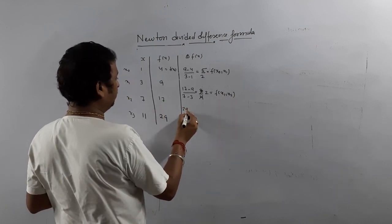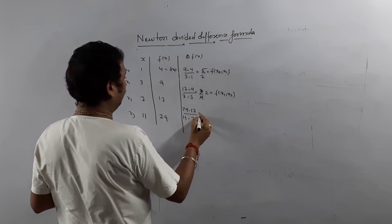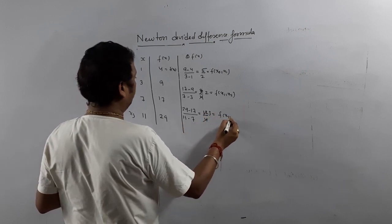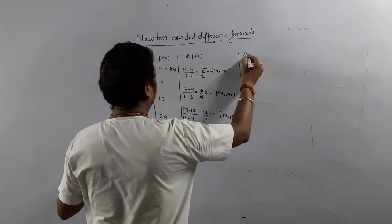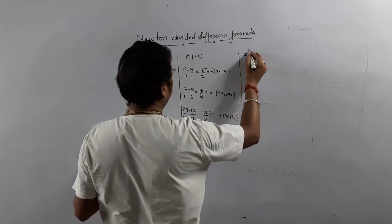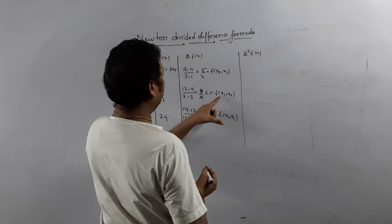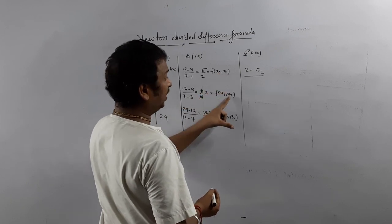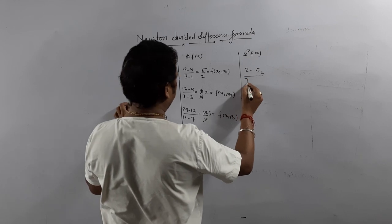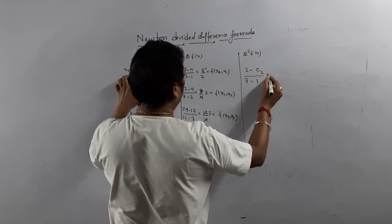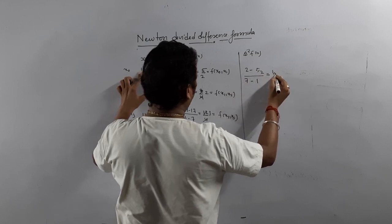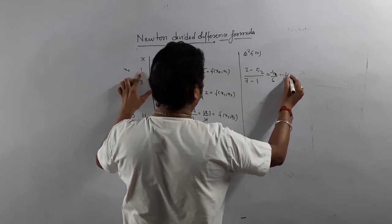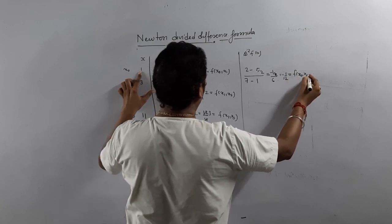Next first divided difference: (29 − 17) divided by (11 − 7) — that is 12 divided by 4, which equals 3. This is f[x2, x3]. Now for del squared: difference of these two first divided differences. That is (2 − 5/2) divided by (x2 − x0): x2 is 7, x0 is 1, so divided by 6. The value is (−1/2) divided by 6, which equals −1/12. This is f[x0, x1, x2].